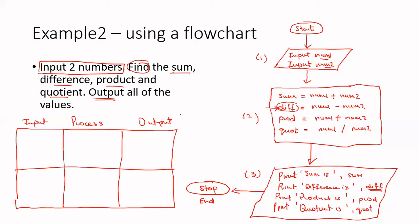So at number one, we are inputting num1 and num2. And let's just take some values. Num1 equals, let's go 10. And num2, let's say, is 2. So that's my input that was done at box one.